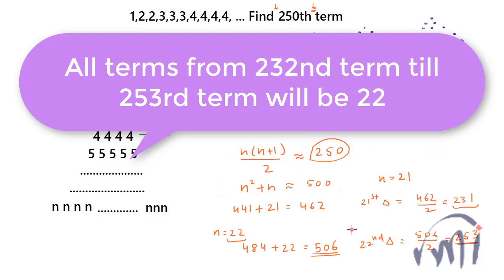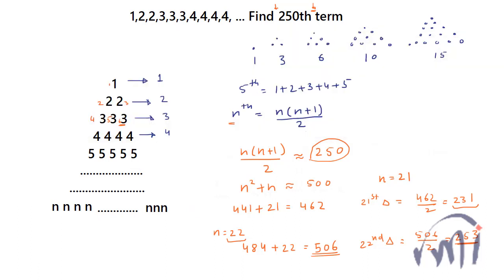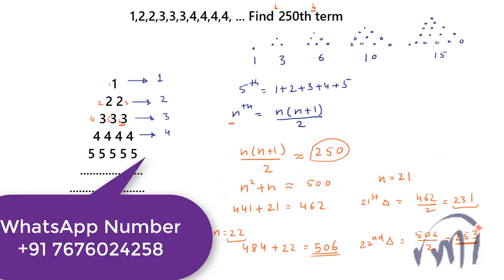So the 250th term will actually be in the 22nd row, where all the numbers are 22. This was a very interesting problem and I solved it using triangular numbers. If you also have any problem for which you need a solution, you can send your problems to the number given below. I'll try to solve it, and if it is interesting I will make a video on it. That's all for this video — keep watching MathSmart, bye bye!